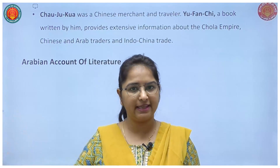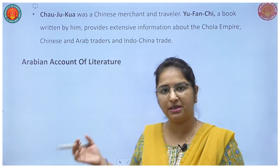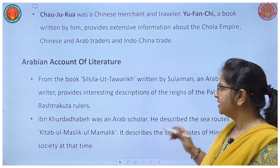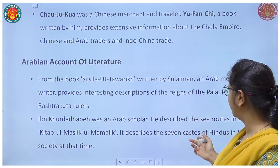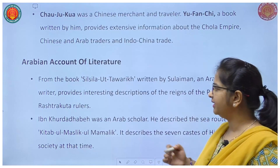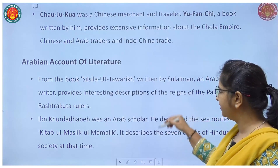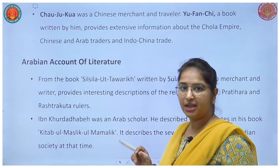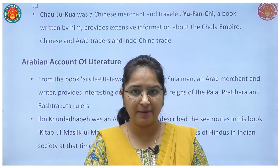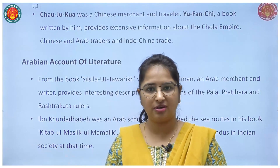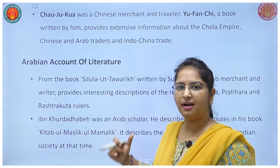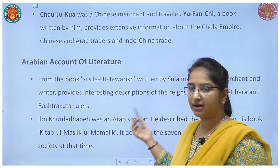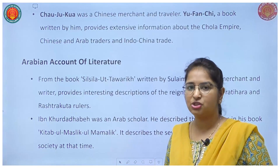Now we will move to the next part — Arabian literature. From the book Silsila Uttawarik by Suleiman, this Arab merchant and writer provides an interesting description of the reigns of Pala, Pratihar, and Rashtrakuta. You must remember the tripartite struggle for Kannauj, where Pala, Pratihar, and Rashtrakuta were the parties — Silsila Uttawarik was written by Suleiman during that time.